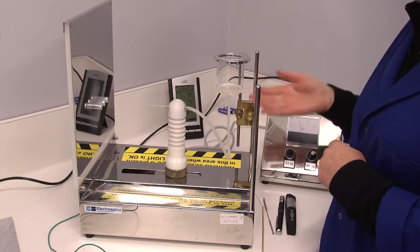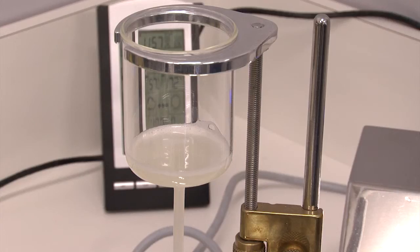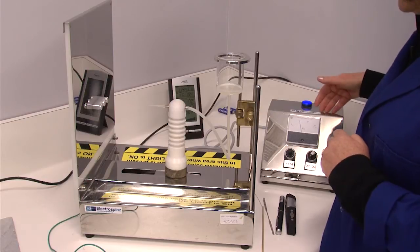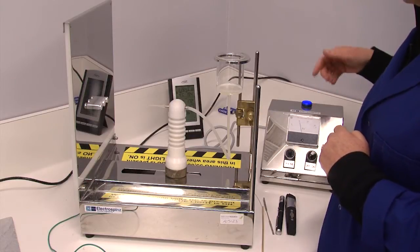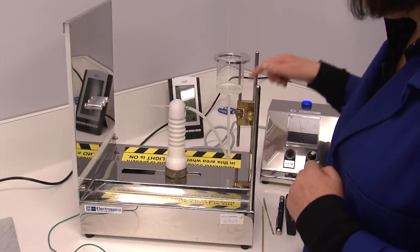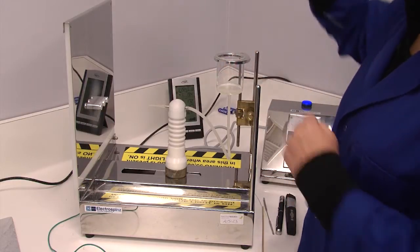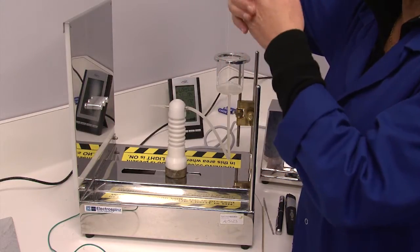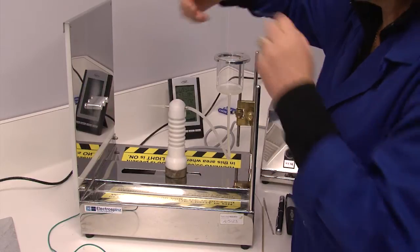And we do that by having a polymer in a solution, applying an electric field to that polymer solution. And what happens is the electric field overcomes the surface tension and you get a Taylor cone forming at the very tip of the pipette tip here.